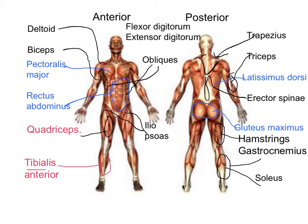The last pair of muscles I want you to label is the flexor digitorum and extensor digitorum. The flexor digitorum is the main muscle on the anterior aspect of the forearm.